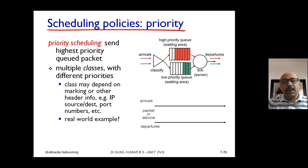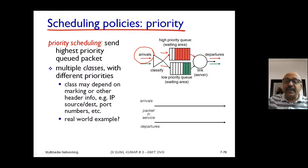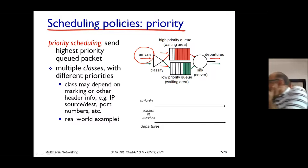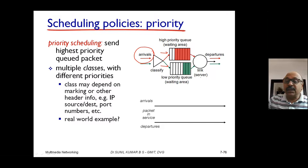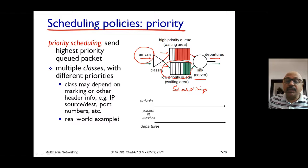That's why priority plays a very important role. Arrived packets will be classified on the basis of their priority — one queue for high priority and another for low priority. High priority packets will always be serviced first, and once completed it will move on to the low priority queue. However, the high priority queue may always occupy the server, and hence the low priority queue may never be given service. This is called starvation, and we have to overcome it.